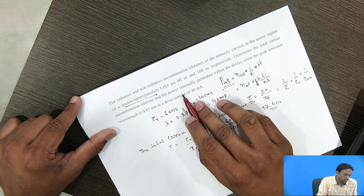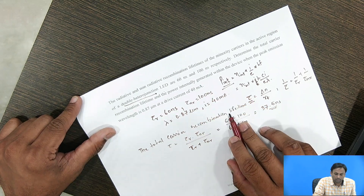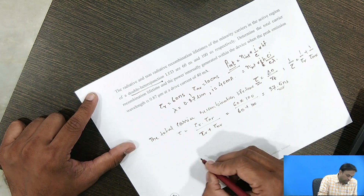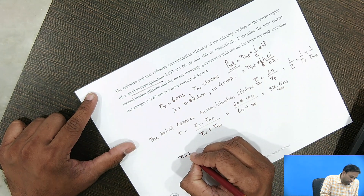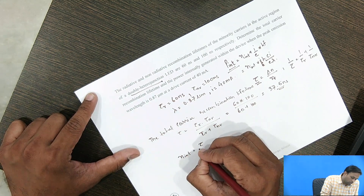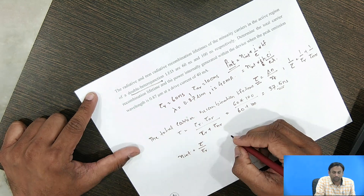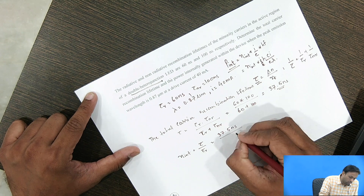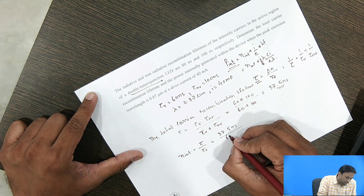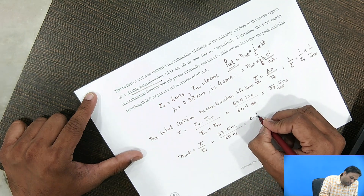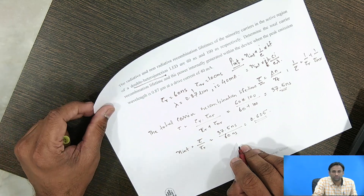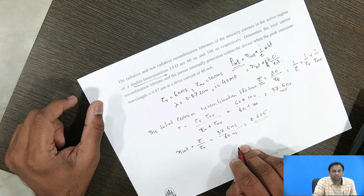For the second part, we need the internal quantum efficiency. The internal quantum efficiency η is given by τ / τ_r = 37.5 / 60, which equals 0.625. So the total internal quantum efficiency is 0.625.